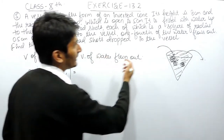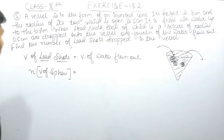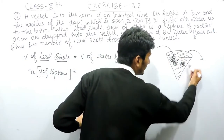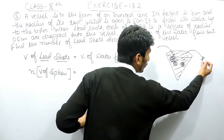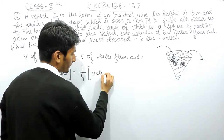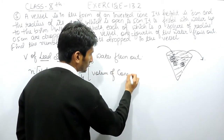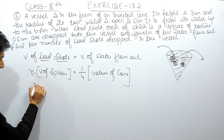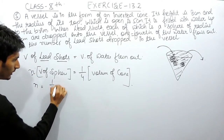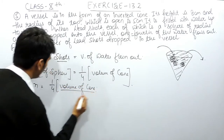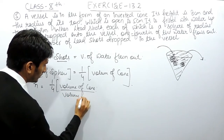That volume of water flowed out equals one-fourth of the water, and since the container is in the shape of a cone, one-fourth of the volume of this cone has flowed out. So, to find the number of lead shots n, that will be equal to one-fourth of the volume of the cone divided by the volume of the sphere.